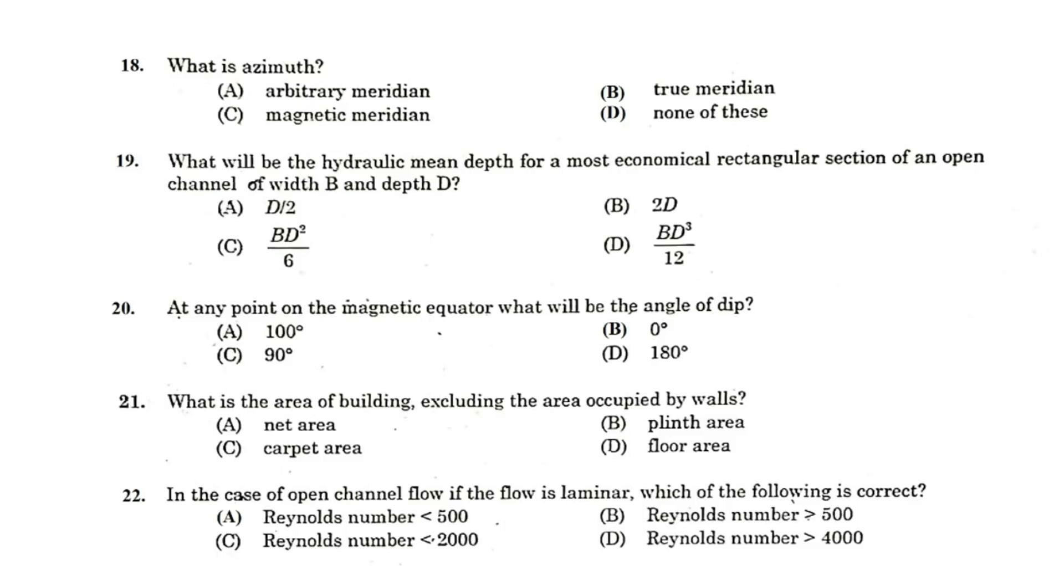What is azimuth? A true meridian is considered to be an azimuth. What will be the hydraulic mean depth for most economical rectangular section of an open channel of width b and depth d? D by 2.